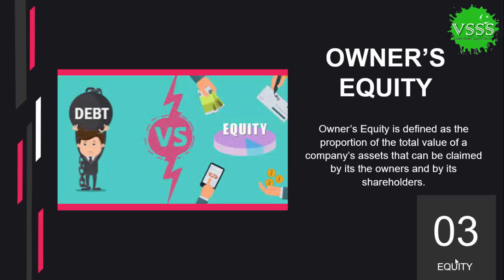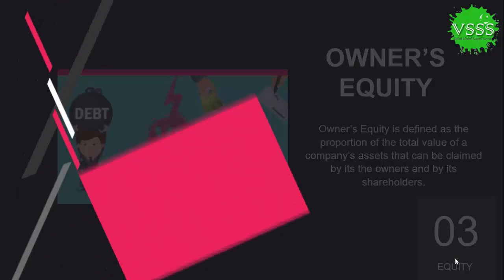Owner's equity is defined as the portion of the total value of the company's assets that can be claimed by its owner and by its shareholders. The difference between debt and equity is that debt comes from external sources like banks or financial institutions, whereas equity is the amount that a person invests into the business from their own pocket, or that shareholders invest from their own funds.